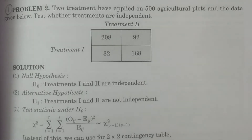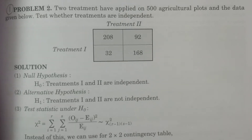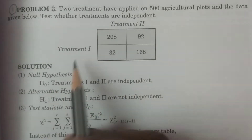In this class we will solve problems on the chi-square test for independence of attributes. Let's look at the first problem.